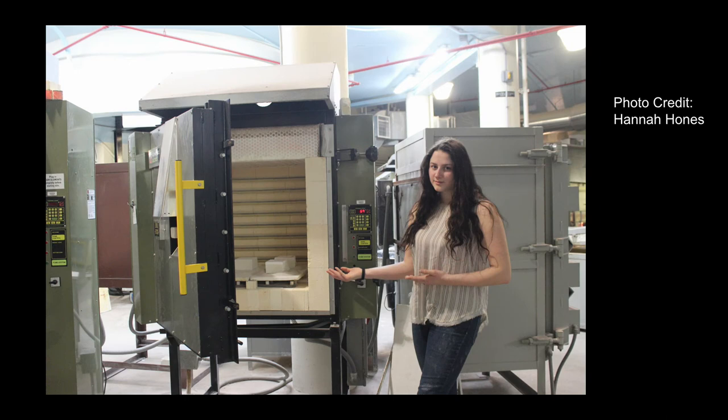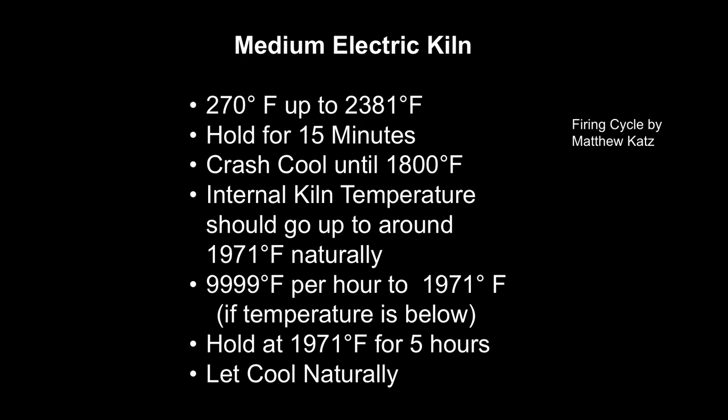I attempted to fire all the tiles in the same kiln to get a similar atmosphere for a cohesive experiment. The kiln cycle is in a medium electric kiln: 270°F per hour up to 2381°F, hold for 15 minutes, then crash cool to 1800°F. The internal temperature will naturally go up to around 1971°F when you close the door. You can type in 9999 for the kiln language to go back up, hold there for five hours, and let it cool naturally.